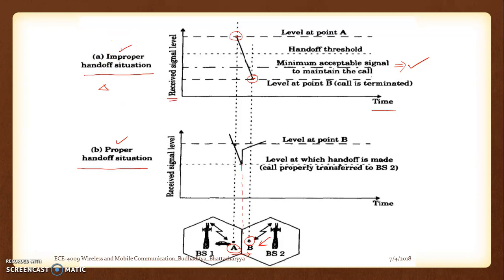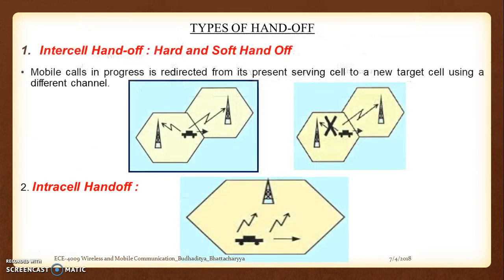We must remember that delta plays a very important role in this case. That is the main diagram of improper and proper handoff. When we look at the different types of handoff, one starting point is the inter-cell handoff, which includes hard handoff and soft handoff.